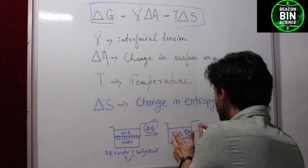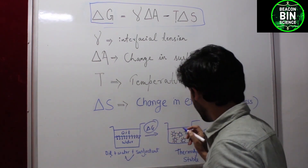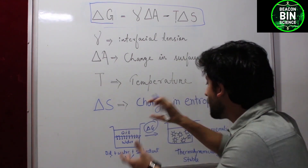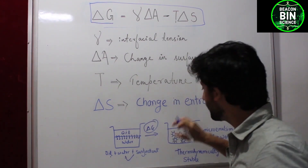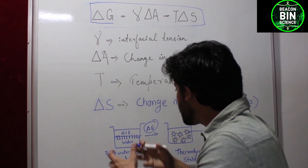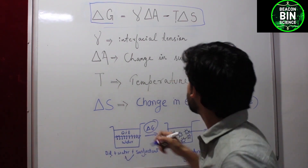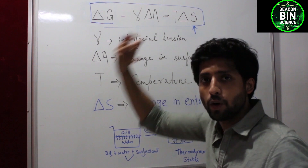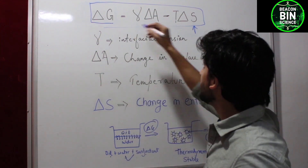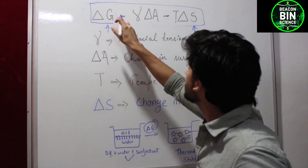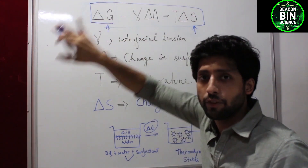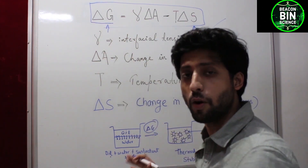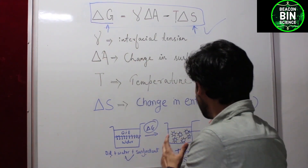The system moves forward to the formation of microemulsion where the oil layer converts into micro droplets. This increase in the number of droplets increases the delta S value — the entropy of the system — which eventually leads to an increase in the delta G value in the negative direction. So the system will move forward to form a thermodynamically stable system.